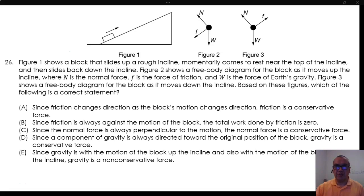Figure 2 shows a free body diagram for the block as it moves up the incline, where N is the normal force, F is the force of friction, and W is the force of Earth's gravity. Figure 3 shows a free body diagram for the block as it moves down the incline.